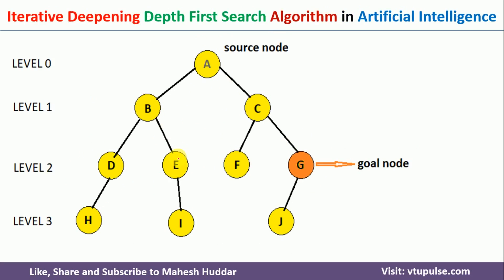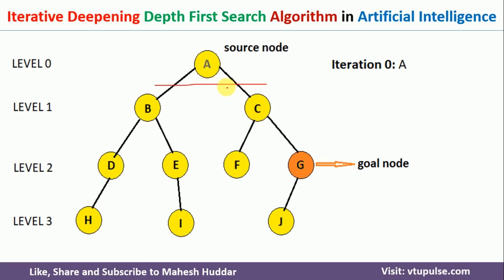In Iterative Deepening Depth-First Search, rather than going all the way to the leaf nodes, we put a restriction on the level in every iteration. For example, in iteration 0, the level is equivalent to 0 — we only search for the goal node at that level. The tree is considered only up to that point. So we reach A, but A is not the goal node, meaning we cannot find the goal node at level 0.